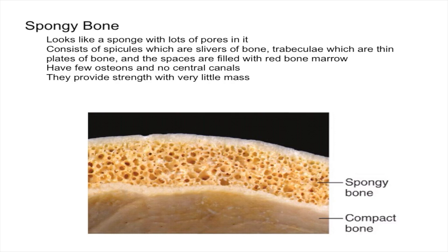Trabeculae is most often made of collagen, but in spongy tissue, trabeculae is made of bone. In terms of the red bone marrow, it is a site of production of blood cells — blood cells are produced there.